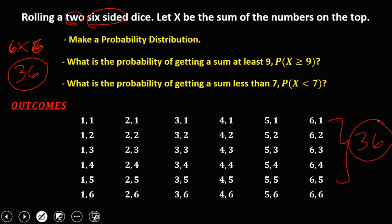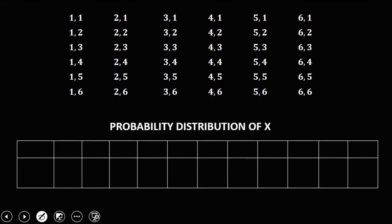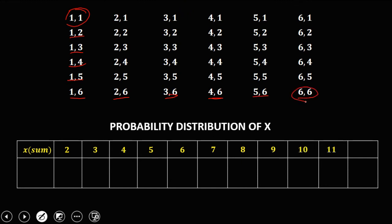Since our random variable X is the sum of the numbers on top, we start with the smallest sum. One plus one gives a sum of 2; one plus two gives 3; one plus three gives 4; one plus four gives 5; one plus five gives 6; one plus six gives 7; two plus six gives 8; three plus six gives 9; four plus six gives 10; five plus six gives 11; six plus six gives 12 — the highest possible sum. The probability of getting a sum of 2 is 1/36.